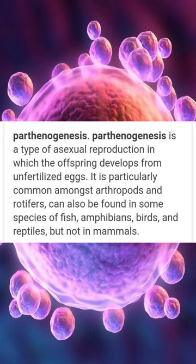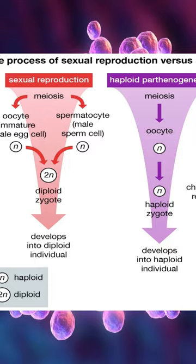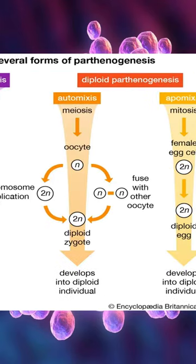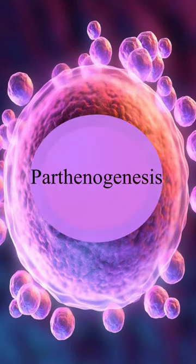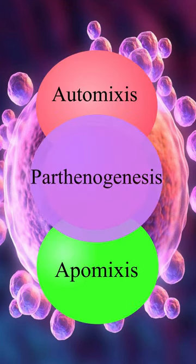While parthenogenesis, also known as virgin birth, can be broadly defined as the creation of offspring from unfertilized egg cells, on a more complicated level, parthenogenesis can be subdivided into two distinct types.